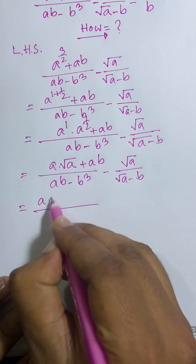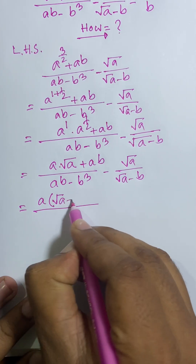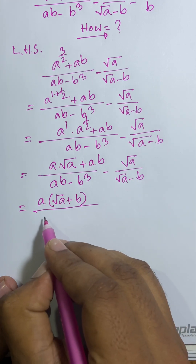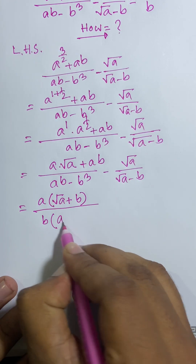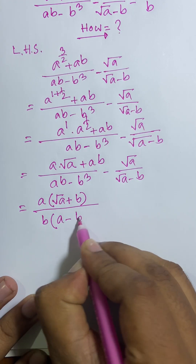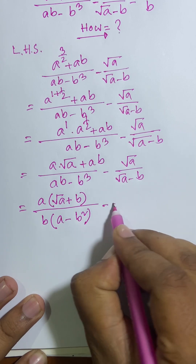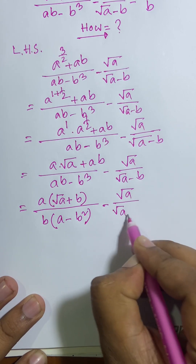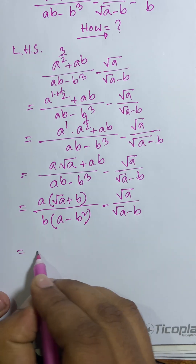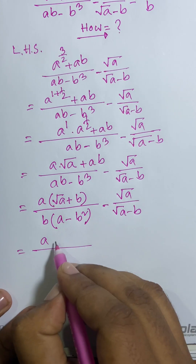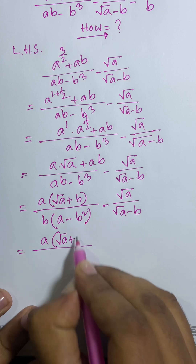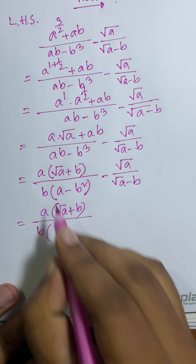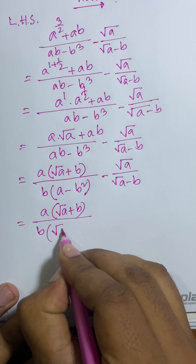Now a is common, so: root over a times (root over a plus b). Here b is common in the denominator, so we can say b times (a minus b) in the second term. So we have: a root over a plus b times b into (a minus b), minus root over a over (root over a minus b).